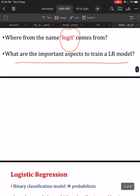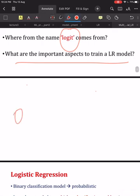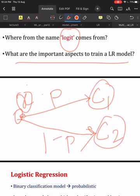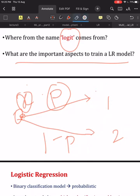In logistic regression, if any instance X is given and you have two classes — say c1 and c2 — then the logistic regression classifier can tell you how much probability that instance has of belonging to c1 or c2. Since it is a binary classifier, if it predicts the instance belongs to c1 with probability p, then obviously the probability of belonging to c2 is 1 minus p.